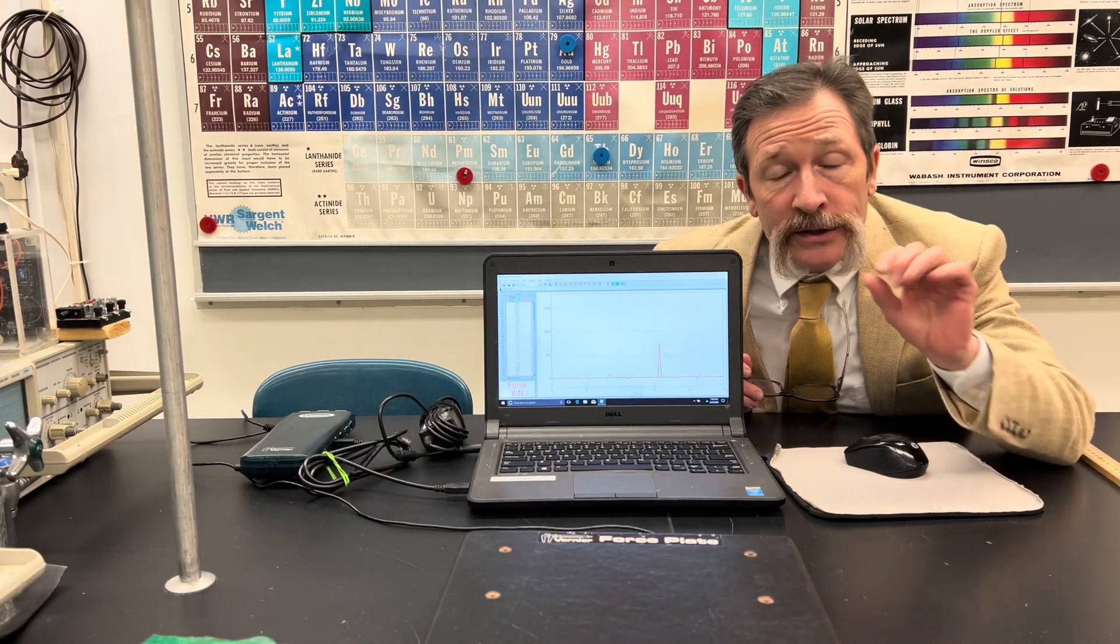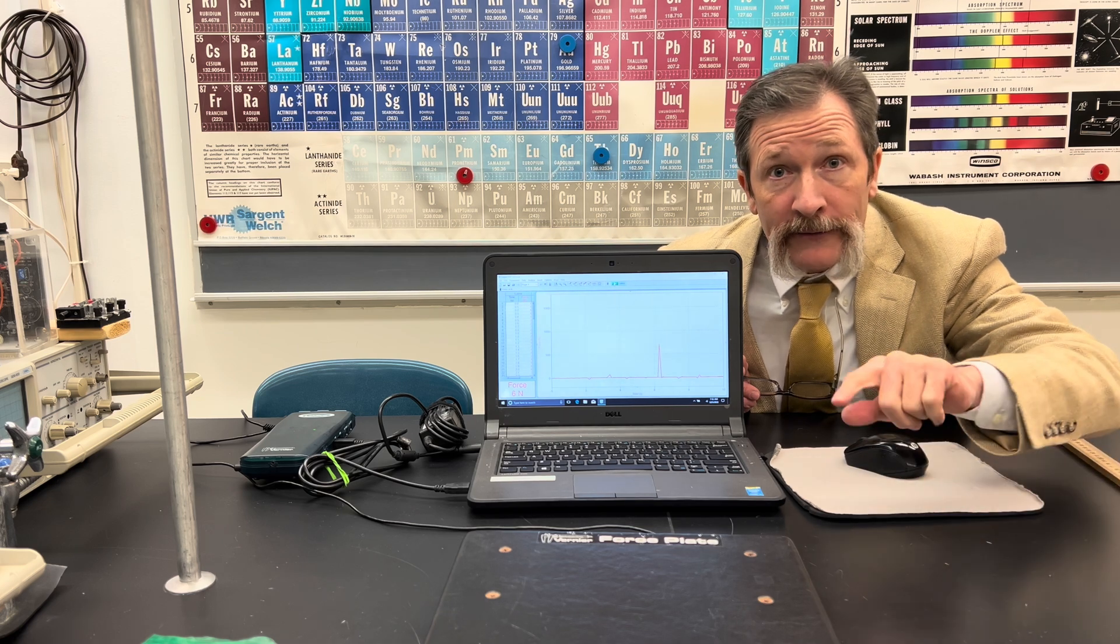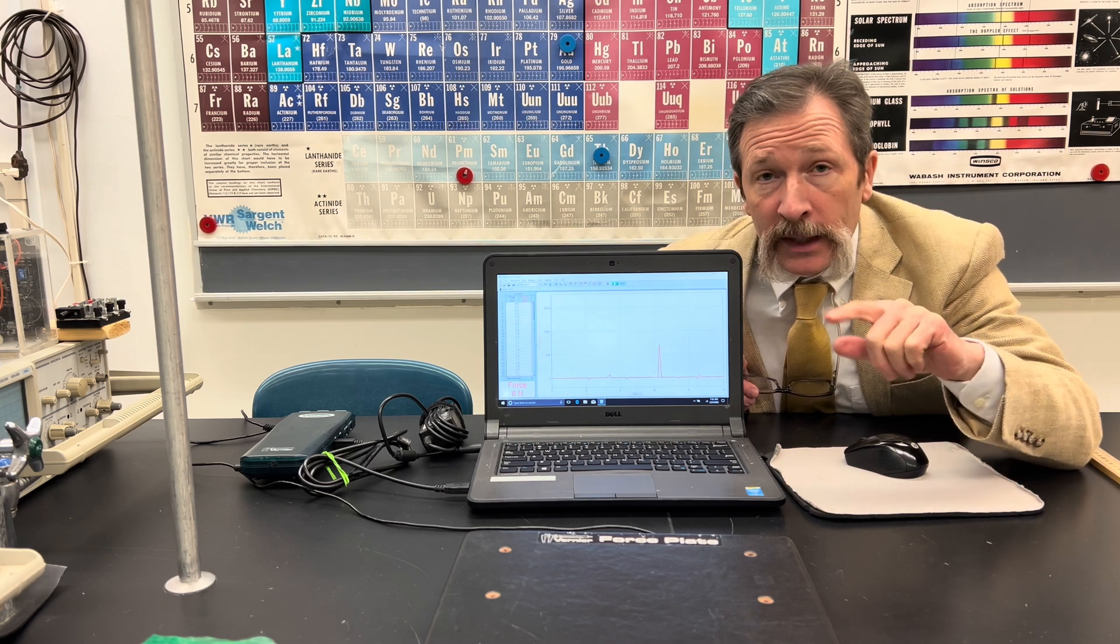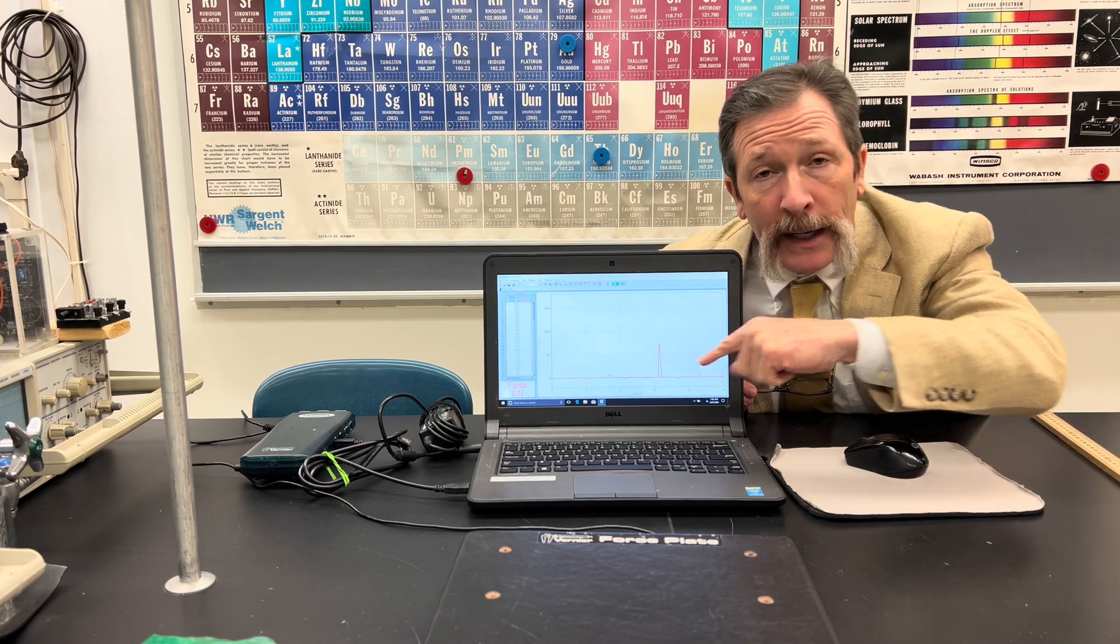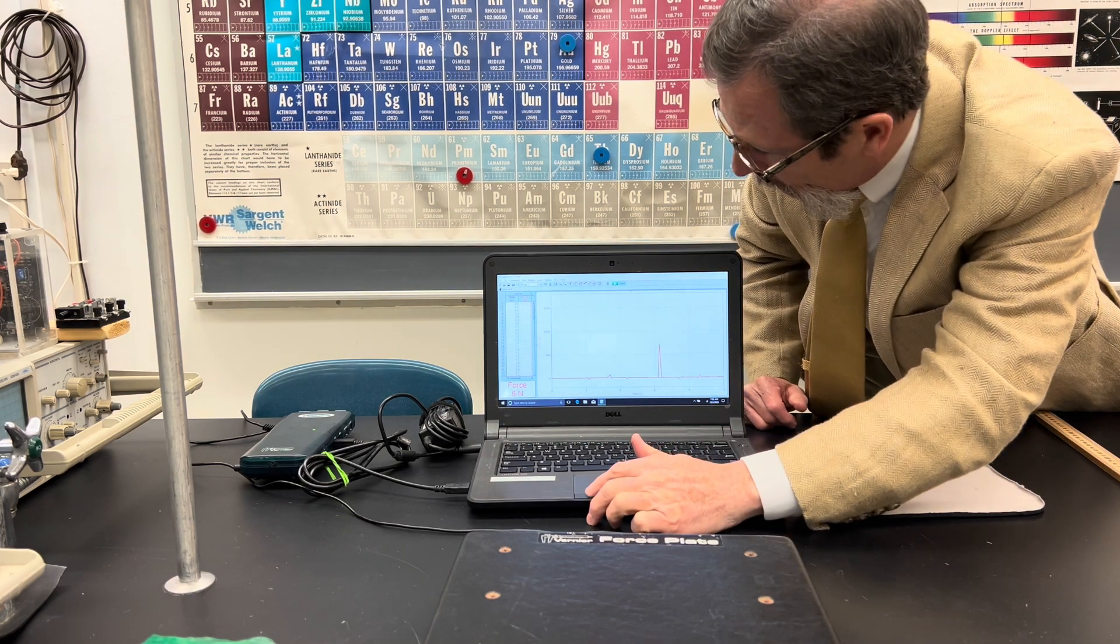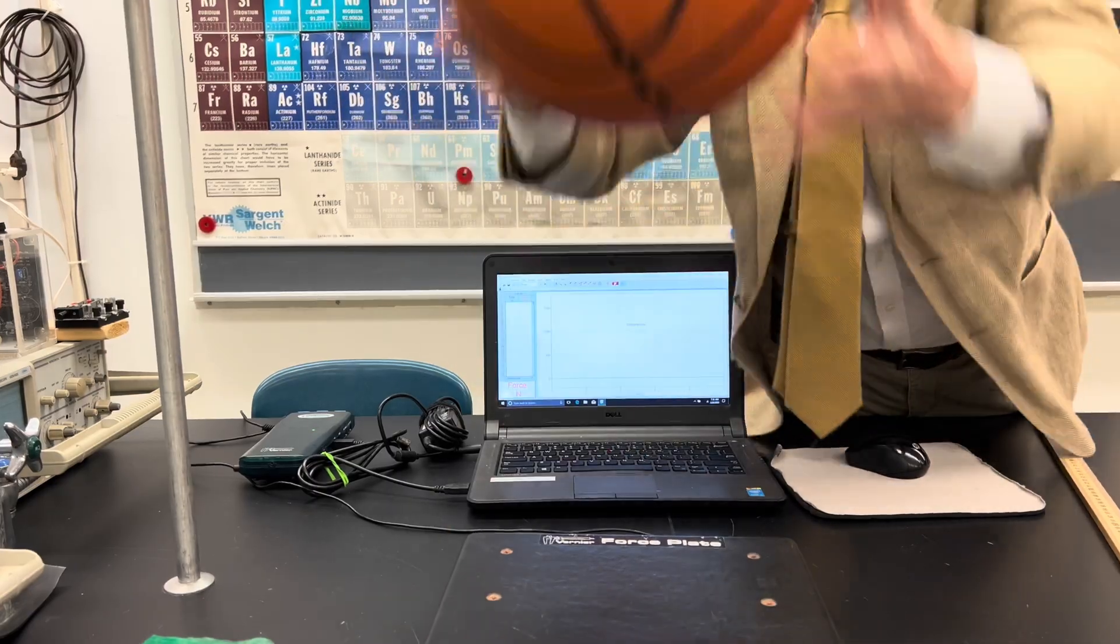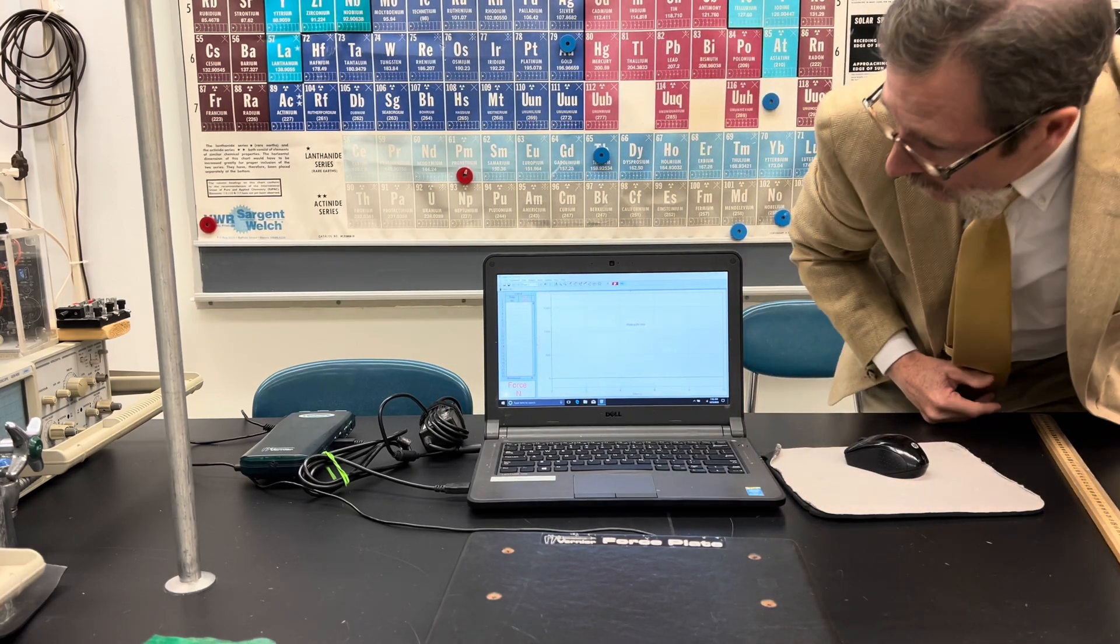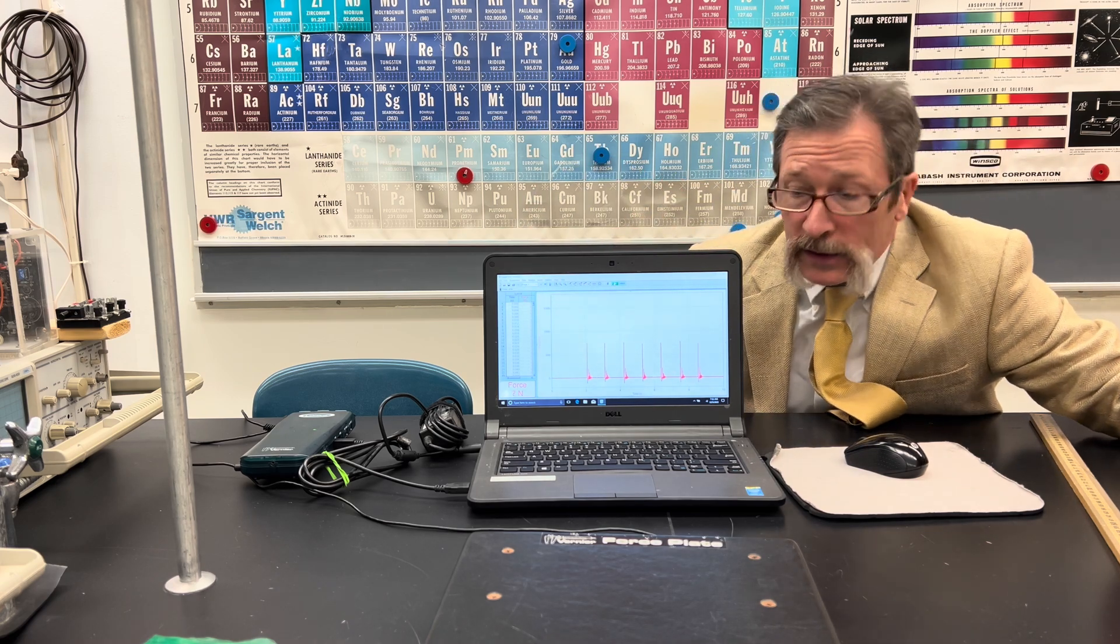I've now set the data collection to 500 samples per second. Before, when it was hitting, I might have been sampling before or after the hit. Hopefully at 500 samples per second, we'll be able to get the maximum hit. And you might ask yourself, why not always leave it at 500? Well, it bogs down the Vernier system and the computer. It might not even display in real time. It'll show up afterwards. As you can see, we captured most of the hits and they're fairly consistent.